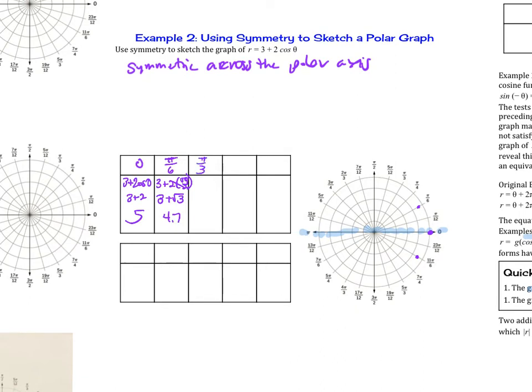Now let's try pi over 3. So 3 plus 2 times positive 1 half. That's going to be 3 plus 1 or 4. So pi over 3, we're at 4. Then I know it's also on the other side. Then let's take a look at pi over 2. Cosine of pi over 2, that is going to be 0, so this is just 3. So 3 is here, and then negative 3 down here.